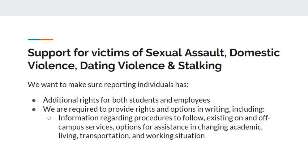Support for victims of sexual assault, domestic violence, dating violence, and stalking is a priority. We want to make sure reporting individuals have information about additional rights for both students and employees. We are also required to provide rights and options in writing, including information regarding procedures to follow, existing on- and off-campus services, and options for assistance in changing academic, living, transportation, and working situations. In your folder, you will find a tri-fold resources handout that has all the required information.